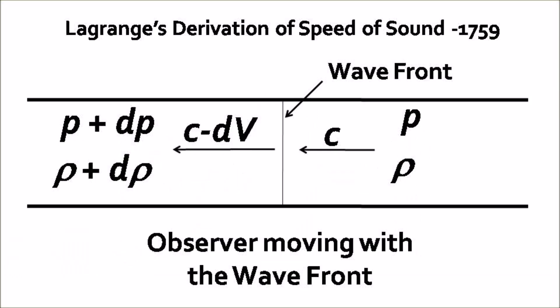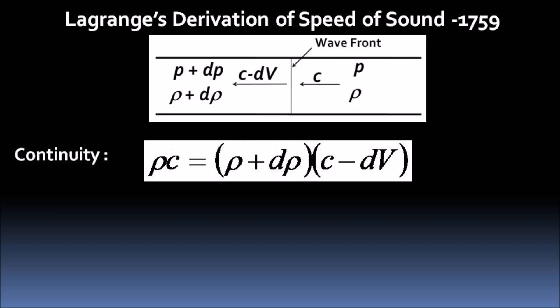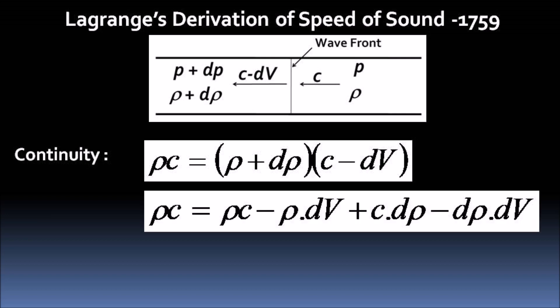Now, the undisturbed gas is observed to move in the wavefront with a speed c. And this speed gets modified to c minus dv just after the wavefront. Mass continuity is invoked across the wavefront and we get the products of densities and speed on both sides of the wavefront being equal. Of course, the area terms being equal get cancelled out.